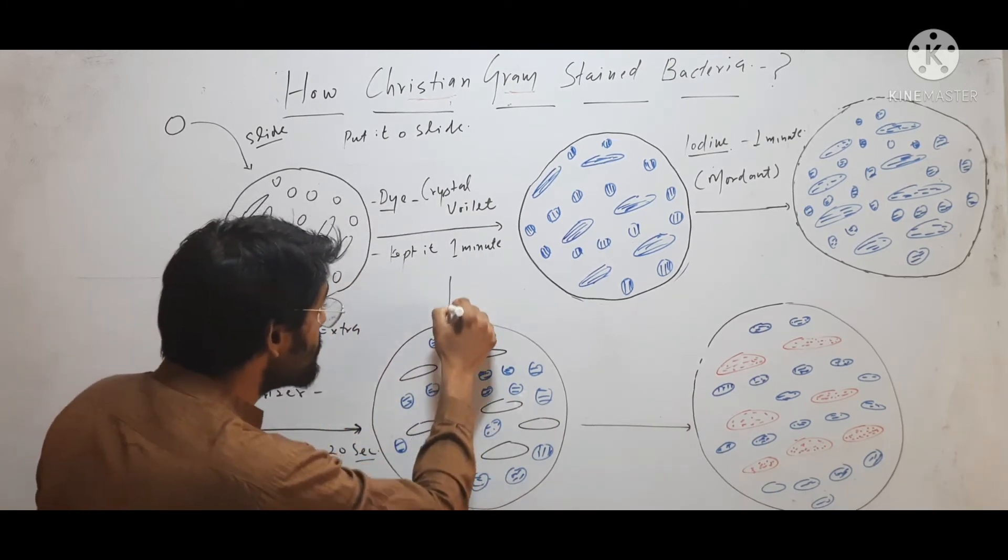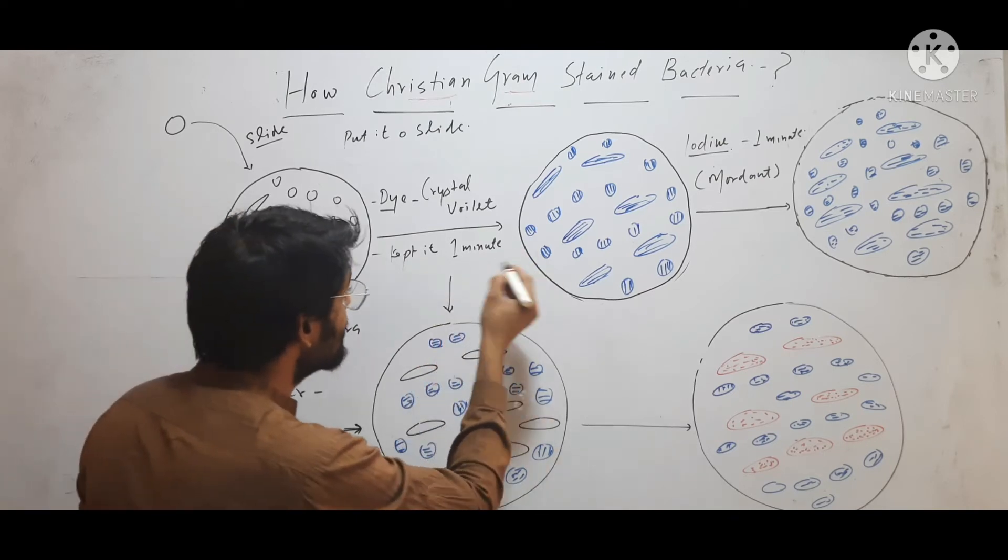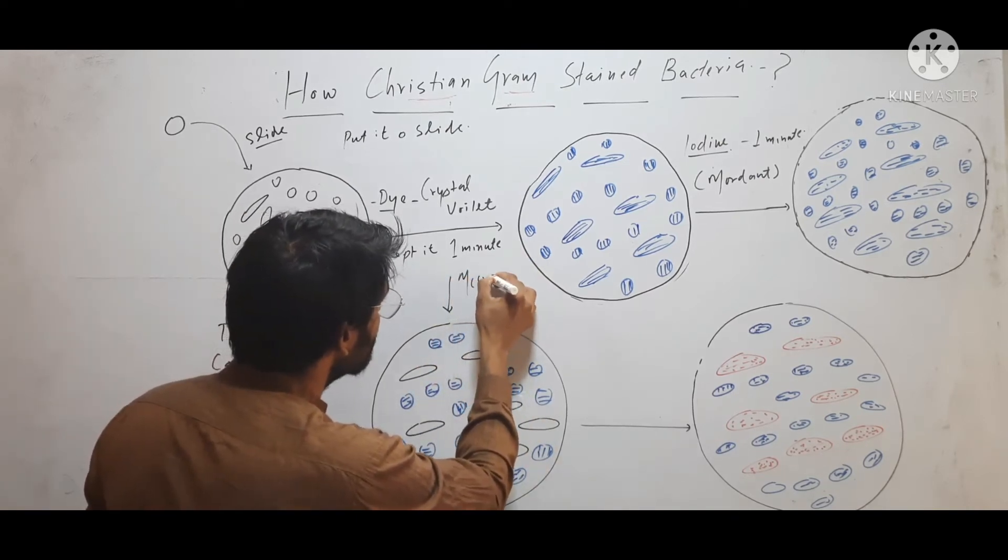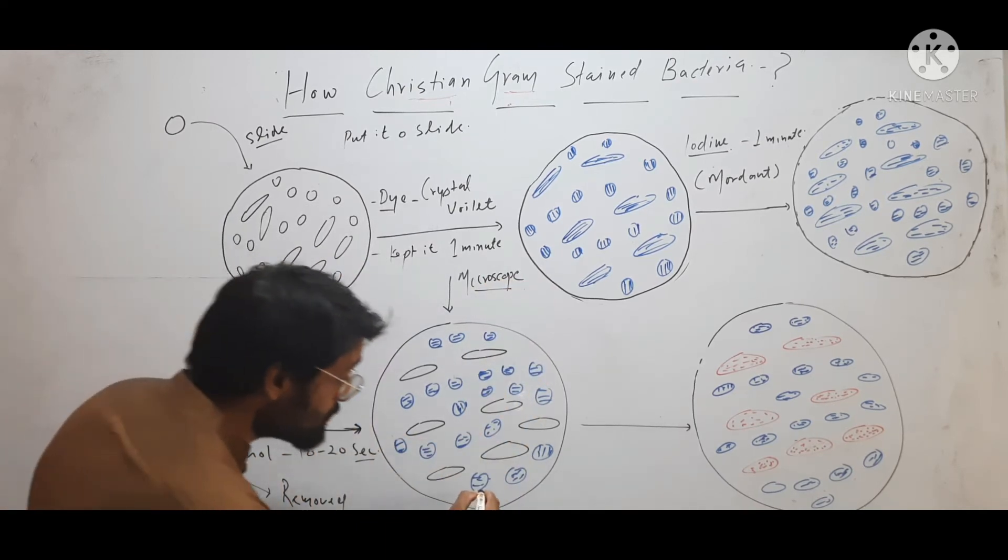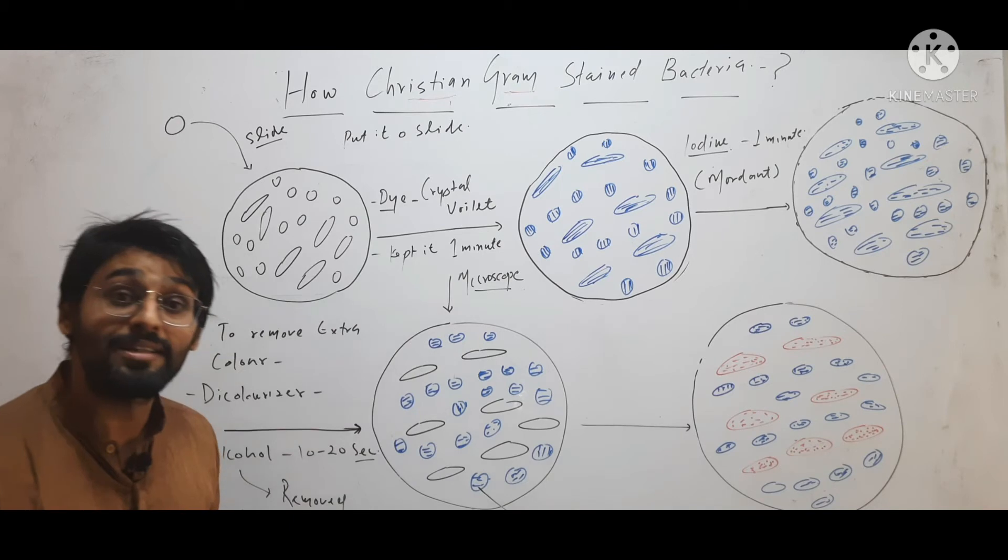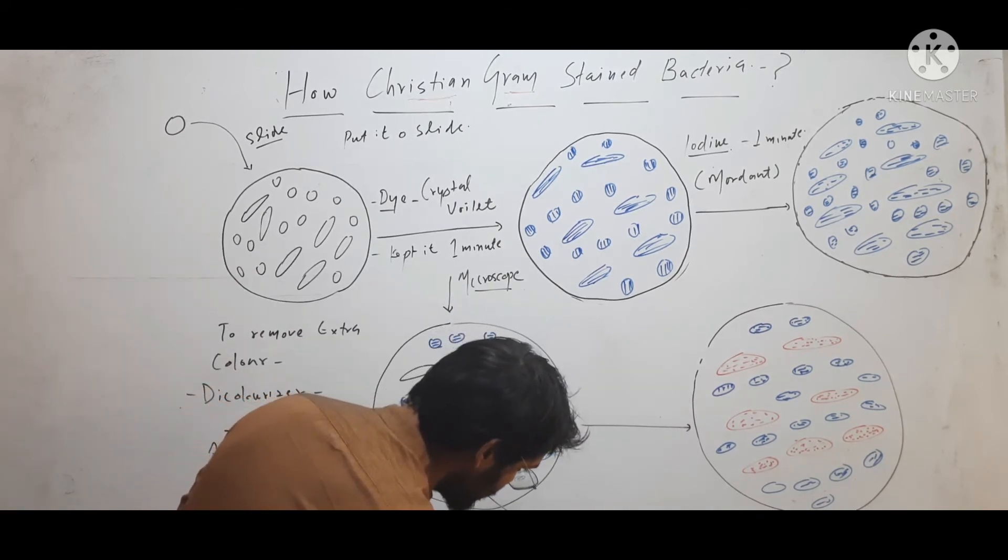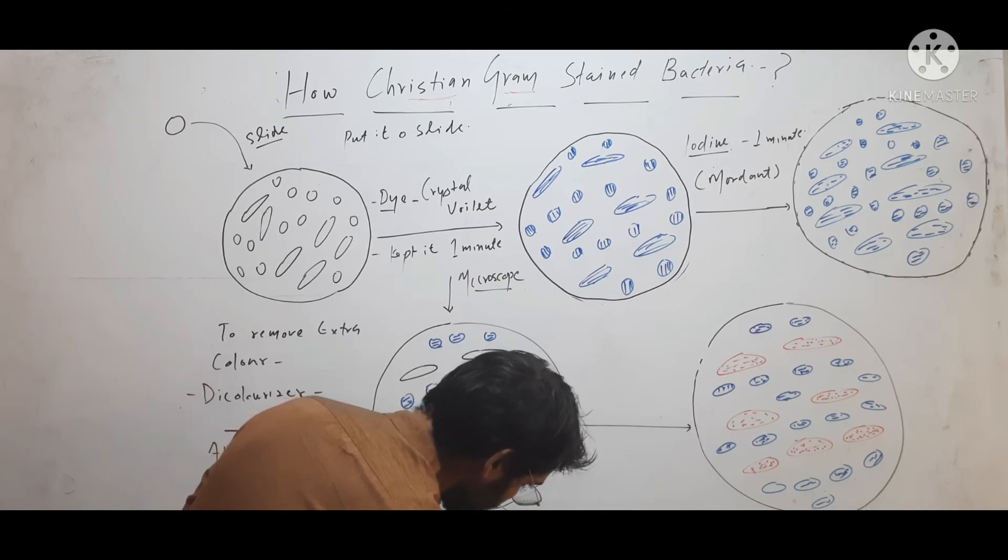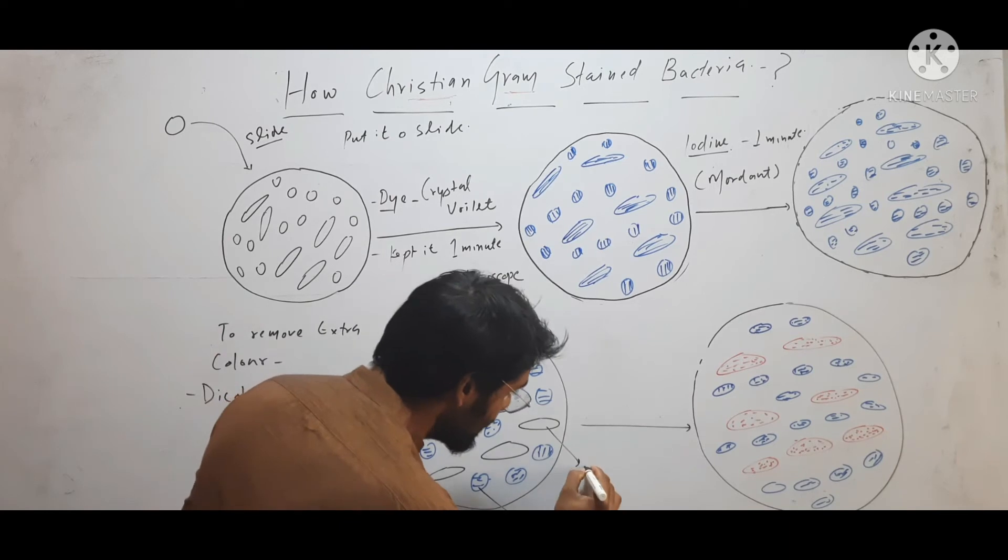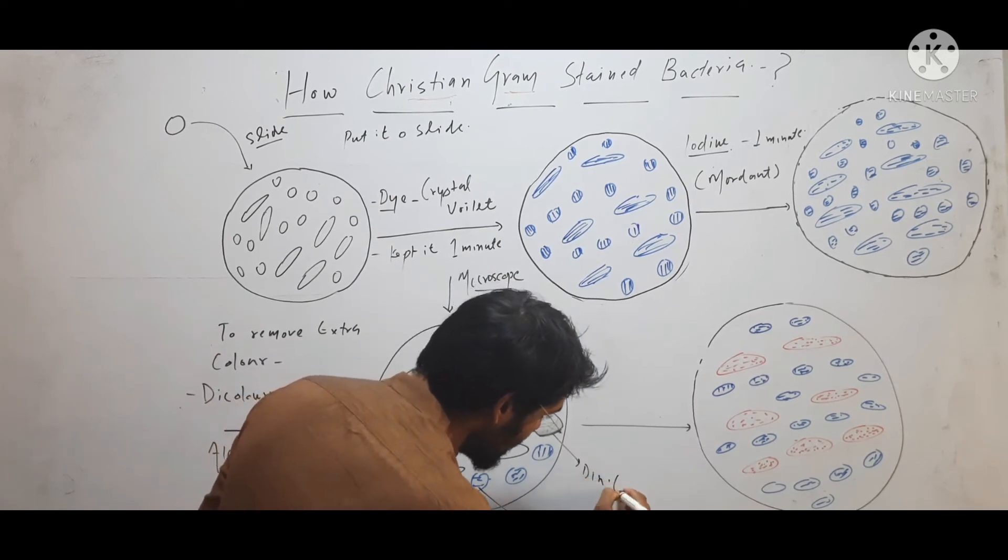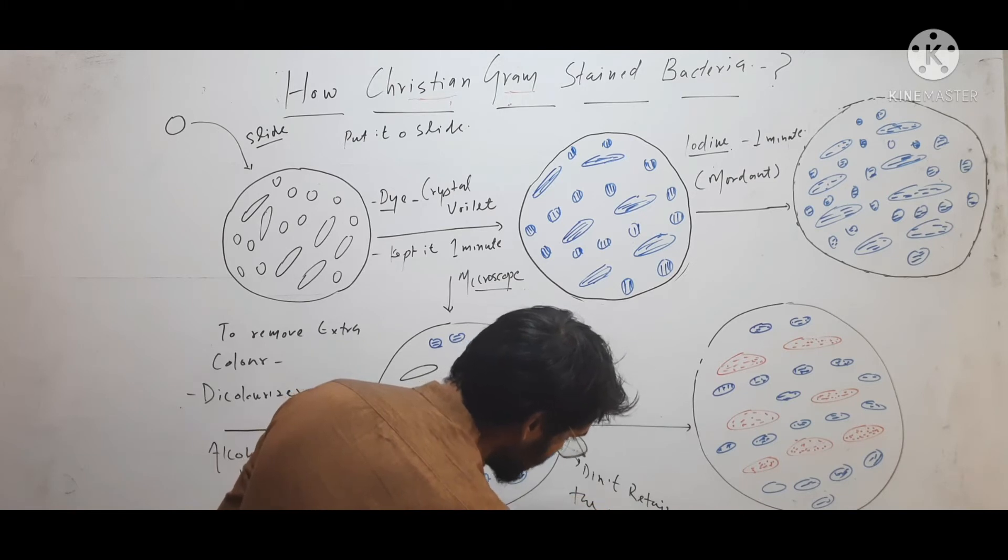Then, he observed this culture under microscope. What he found after his observation: some bacterial cells were violet colored. Some cells retained color, but some cells didn't retain the color.